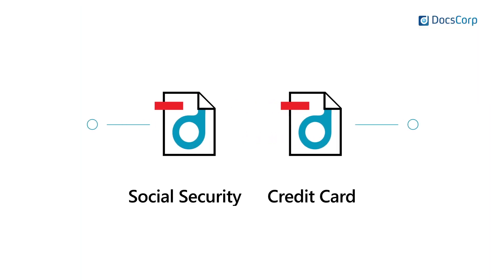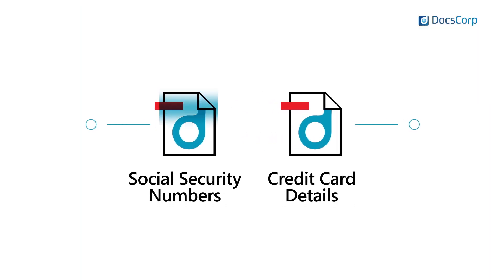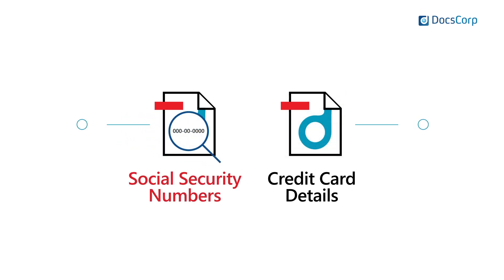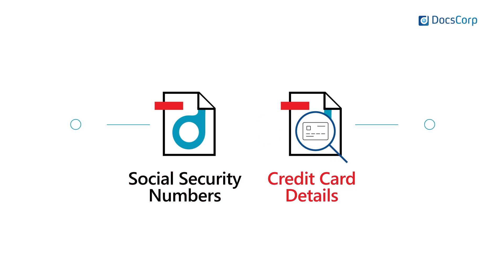Law firms need to make sure that they remove confidential information from their documents. Great examples of those are social security numbers, tax file numbers, and credit card information that might be in documents they've received as part of legal discovery.